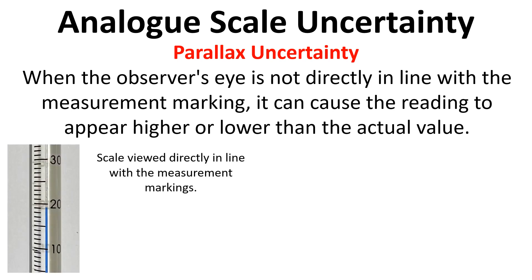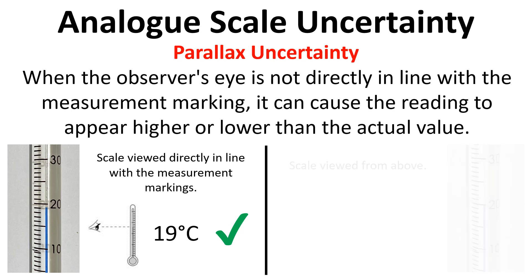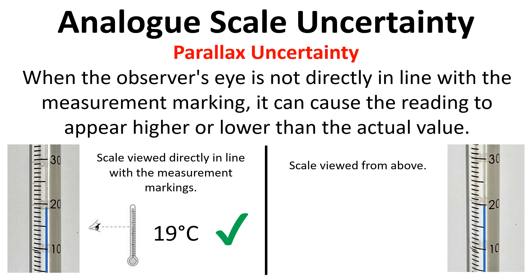In the photograph, the thermometer reading of 19 degrees is being viewed directly in line with the scale — the eye line is directly level with the alcohol in the thermometer, giving 19 degrees C, which is the correct way to do this. Where we can get an error is viewing the scale from above or below. In the photo on the right, the same thermometer at the same temperature is viewed from above and appears to read 20 degrees — that is a parallax error and should be avoided.